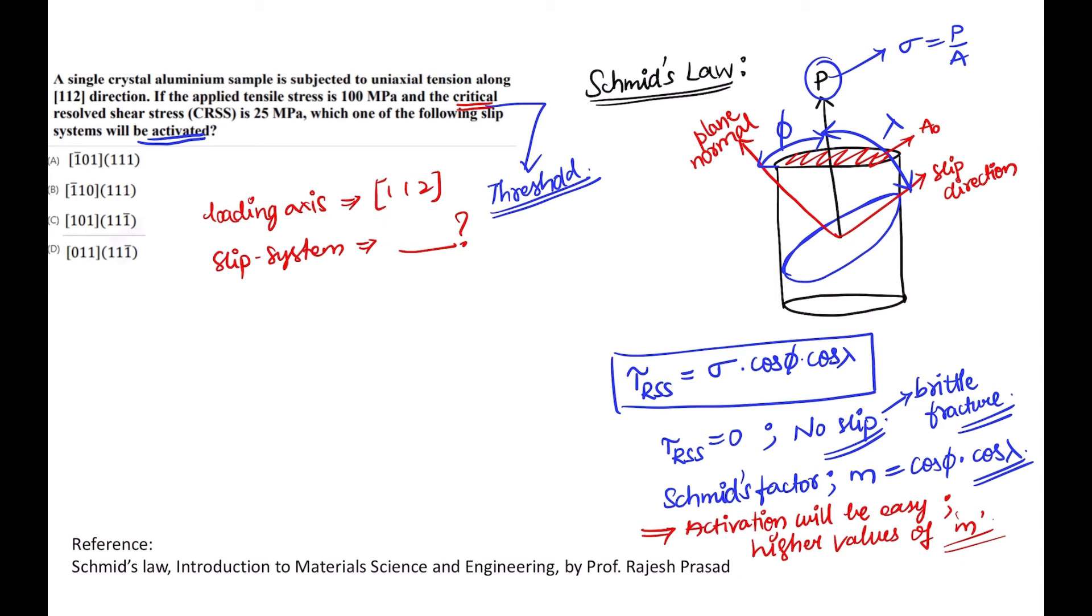As I told you, this has to be the minimum value. 25 has to be the minimum value, so now what you need to do is just calculate m, which should be 1 by 4, so that my slip will be activated. So for that you just need to calculate m over here, and this is the minimum value of m.